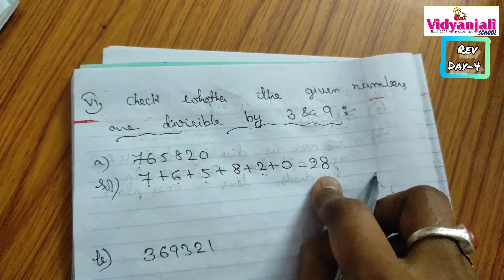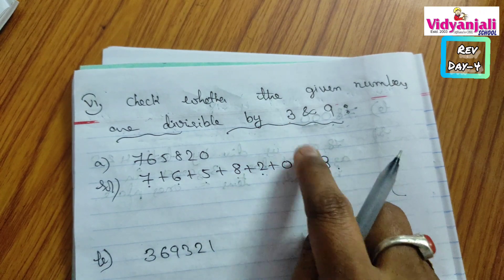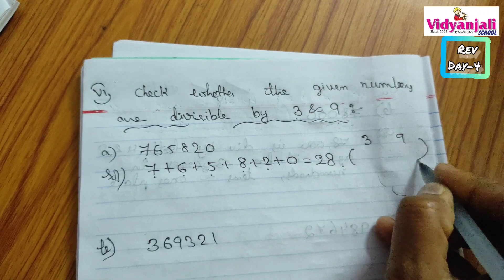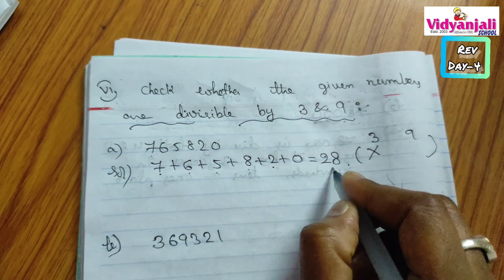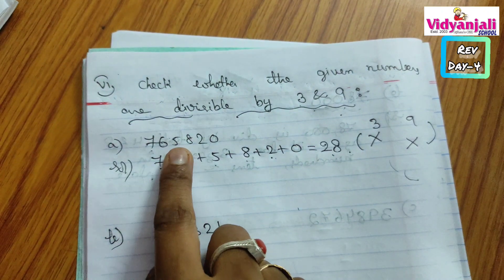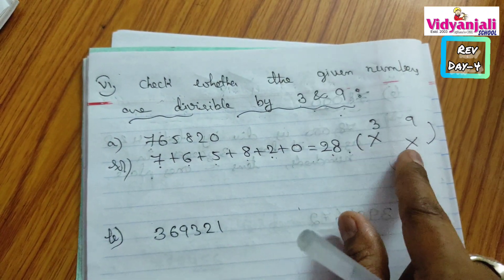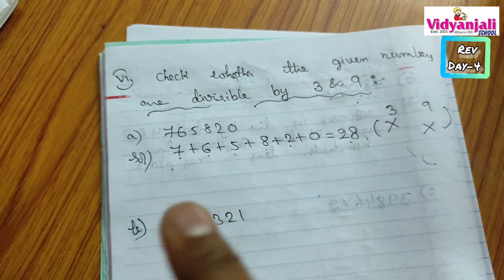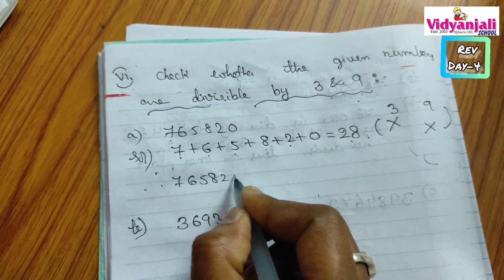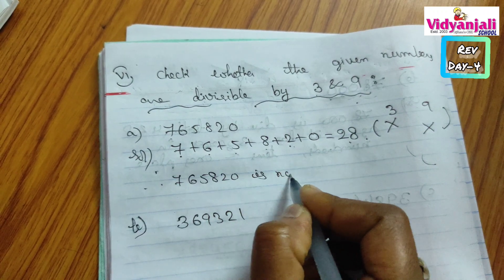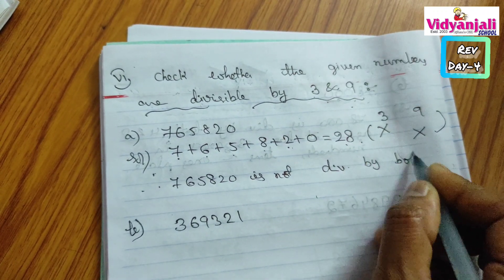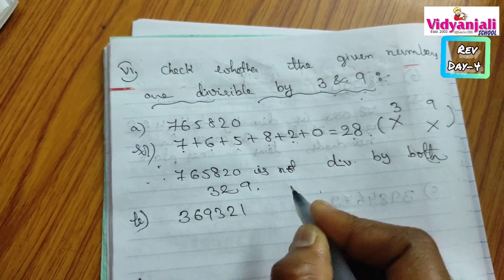Now check if 28 is divisible by 3 — does 28 come in the 3 times table? No. Does 28 come in the 9 times table? No. So the given number is not divisible by 3 and not divisible by 9 either. Therefore 7,65,820 is not divisible by both 3 and 9.